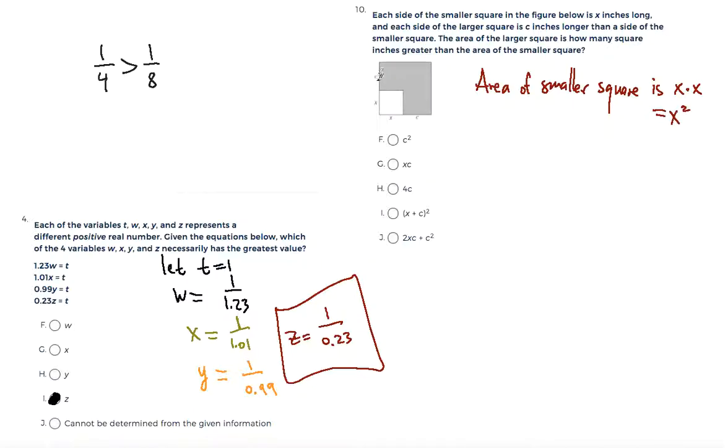Now the dimensions of the larger square will be x plus c. Side of a larger square is x plus c. How do I know that? Because not only you can tell from the figure, but it also says that in the description. It says that each side of the larger square is c inches longer, that's the keyword, longer than a side of the smaller square. So x plus c must be the side of the larger square.